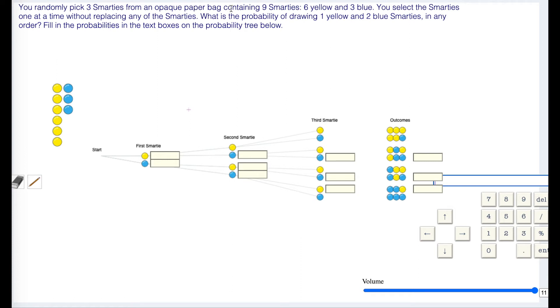Randomly pick three Smarties from an opaque paper bag containing nine Smarties, six yellow and three blue. You select the Smarties one at a time without replacing any of the Smarties. Presumably you're eating them. What is the probability of drawing one yellow and two blue Smarties in any order?